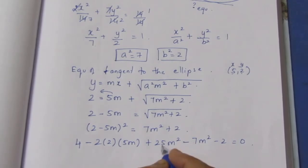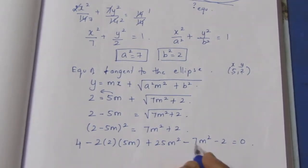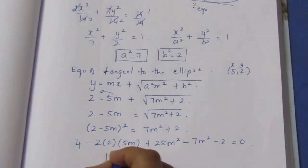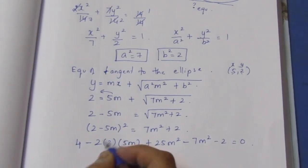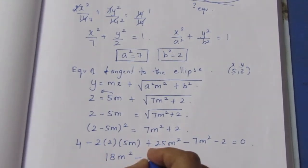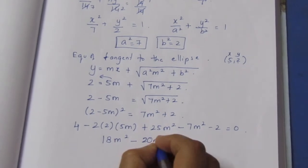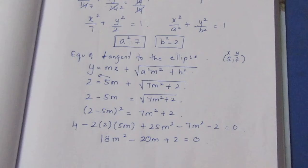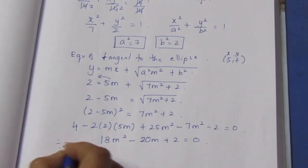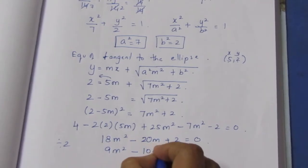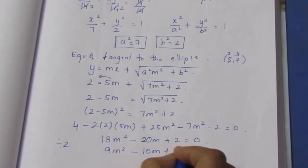Now collecting like terms: the m² terms give 25m² - 7m² = 18m², the m term is -20m, and the constant is 4 - 2 = 2. Dividing everything by 2 gives: 9m² - 10m + 1 = 0.